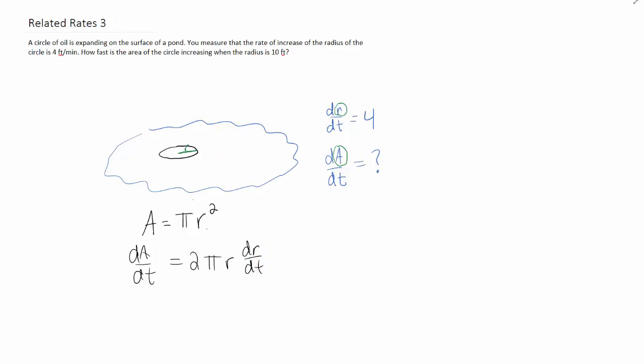Now I think we're given everything we need in this problem. The radius is 10. The dr/dt we talked about already is 4. And that's all that we need to find dA/dt. Let's plug it all in.